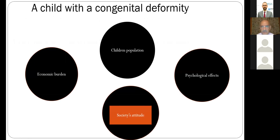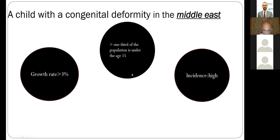When we talk about congenital anomaly, we have to talk about our experience. We have a real problem: the children population is very high in the Middle East, with economic burden, psychological effects, and society's attitude. One third of the population in the Middle East is under 15. The incidence of congenital anomaly is very high because of consanguineous marriage — one third of marriages in Egypt are consanguineous, 50% in Saudi Arabia. Growth rate in Egypt is 3%, and higher in some Middle Eastern countries. That's why we have a high incidence of congenital disorders.